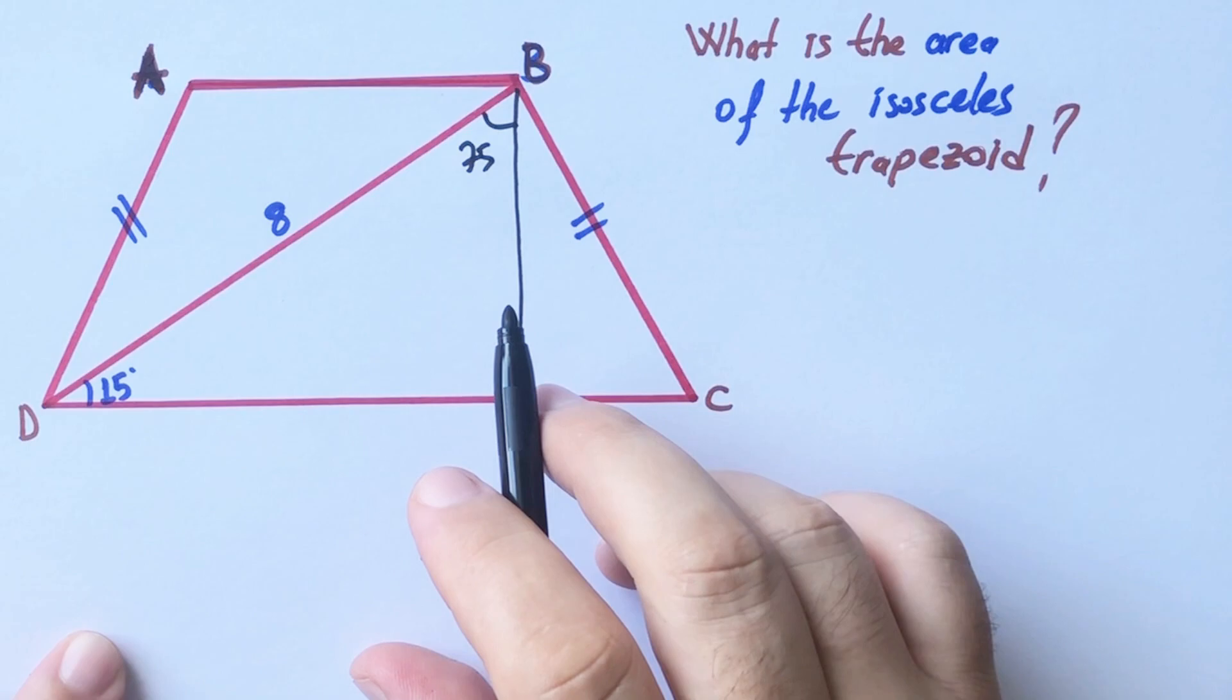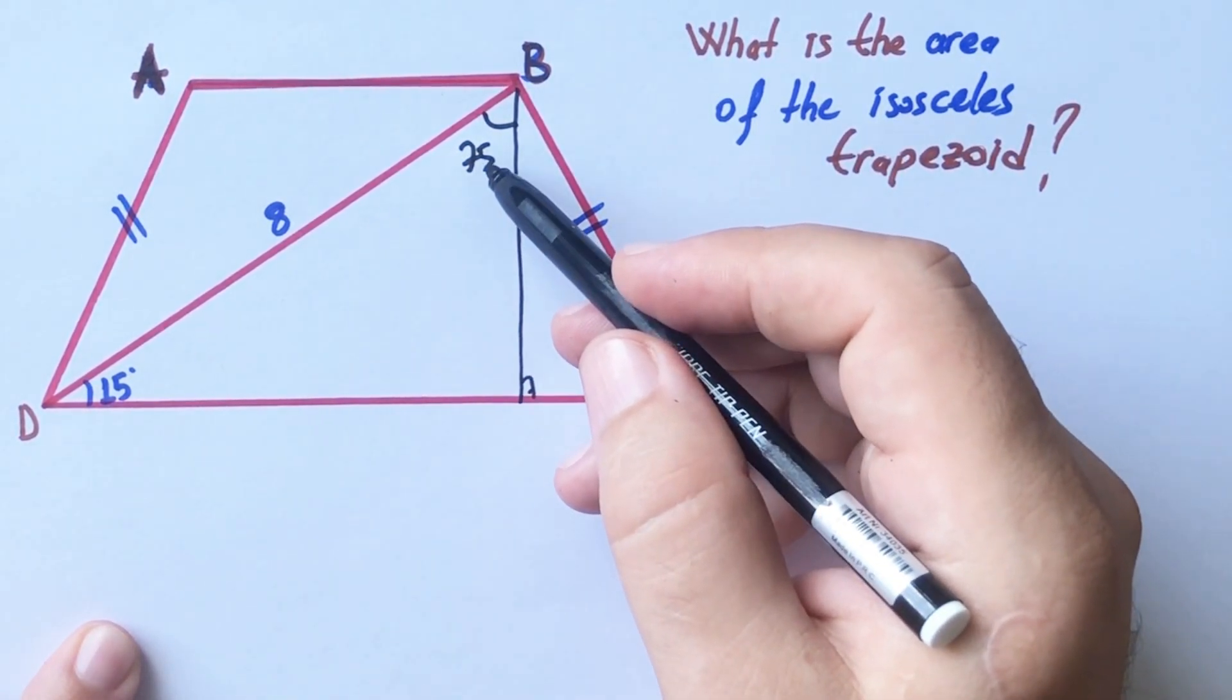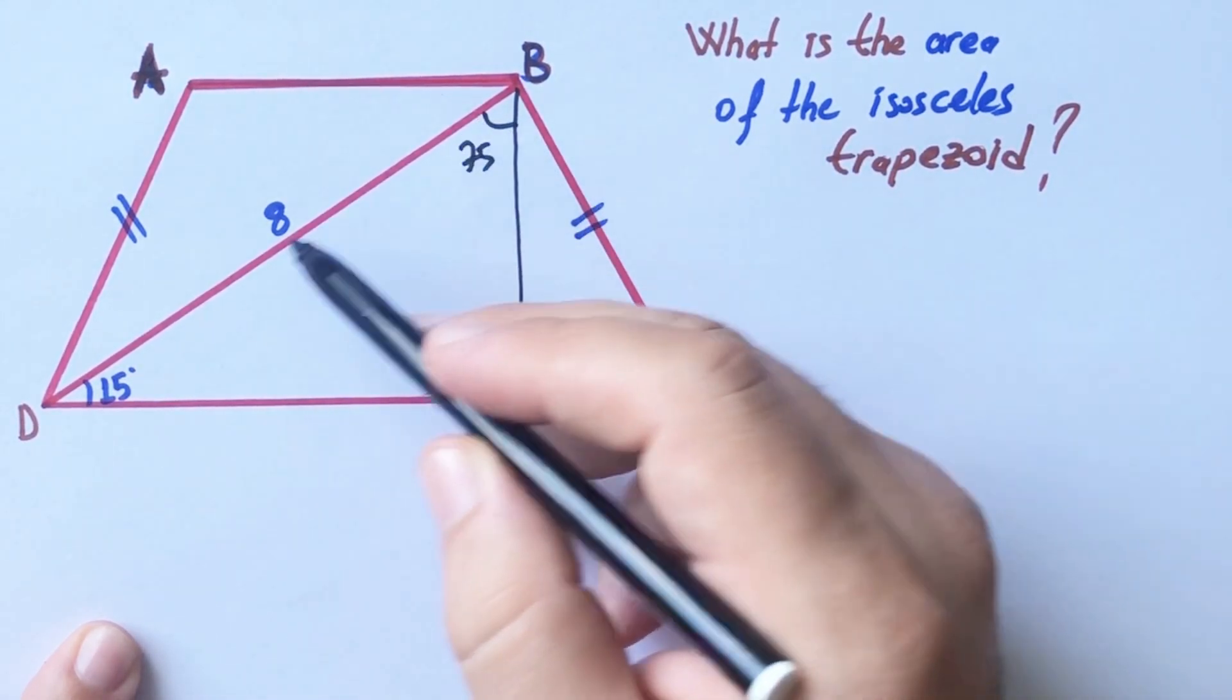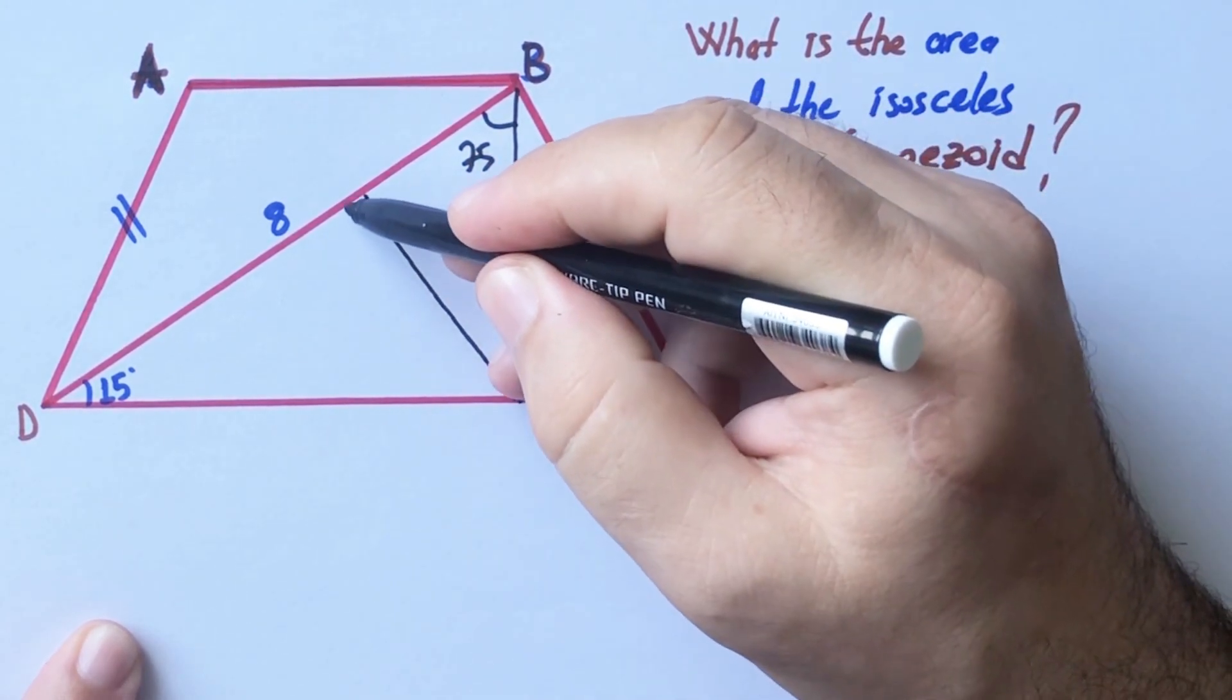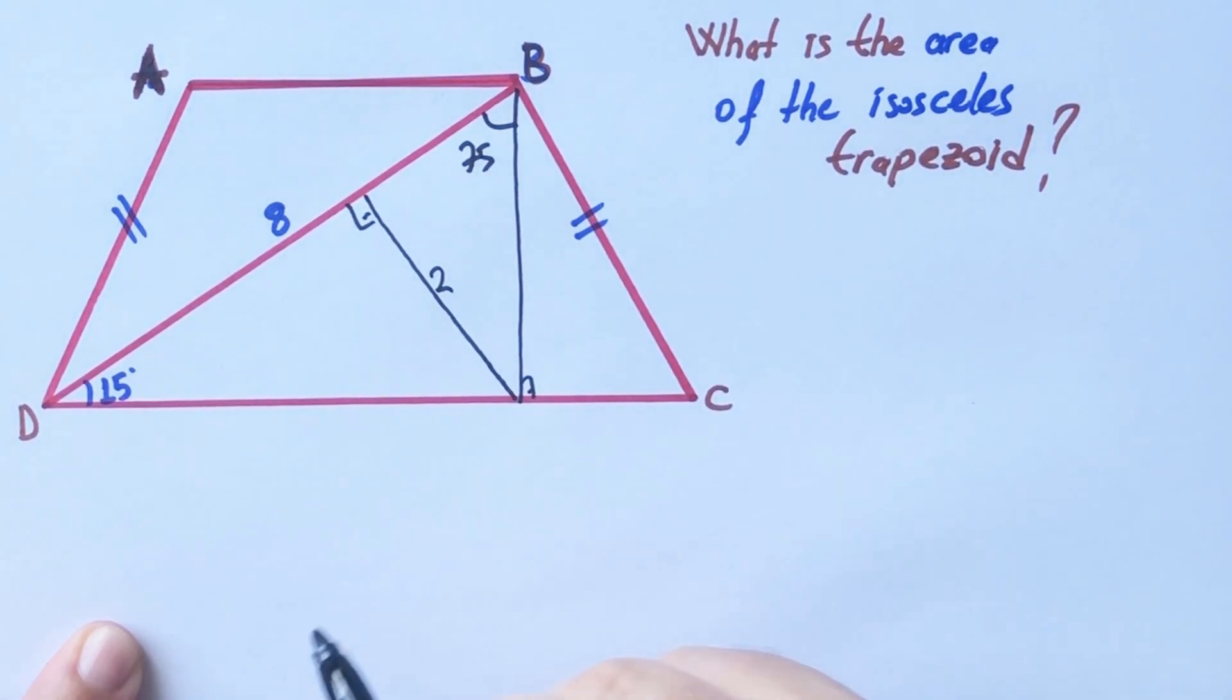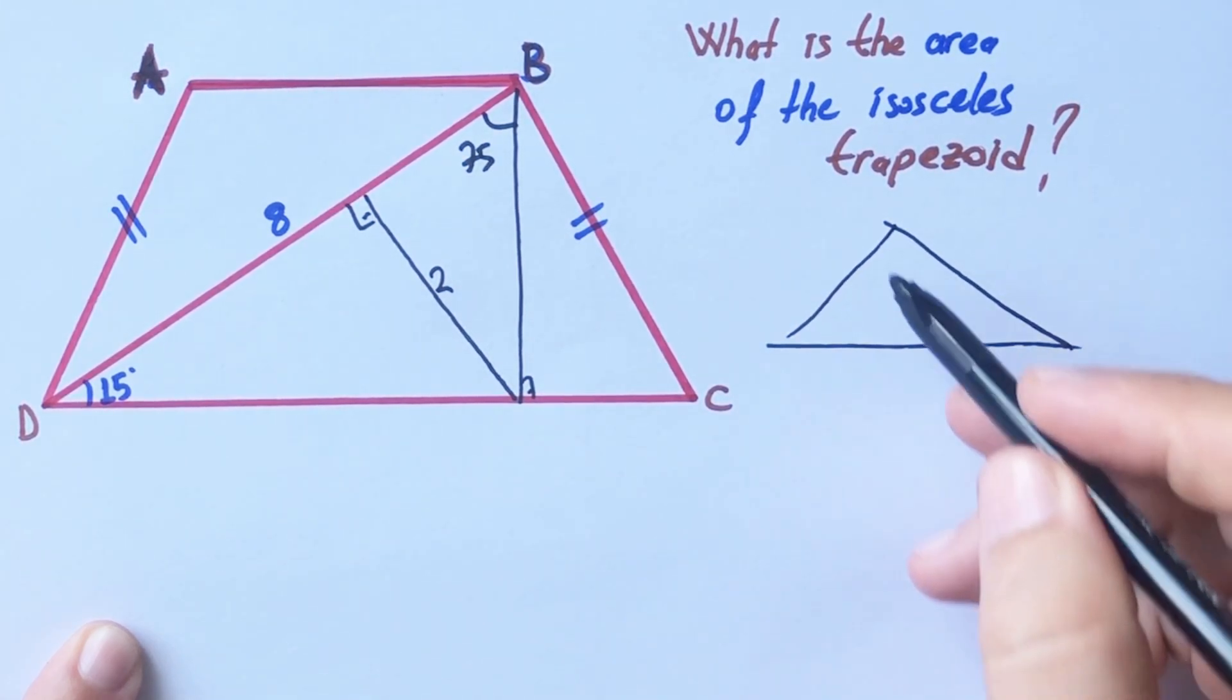And then we know that the base length of the right triangle which base angles are 15 and 75, it's four times of the height. So here must be 2 units.